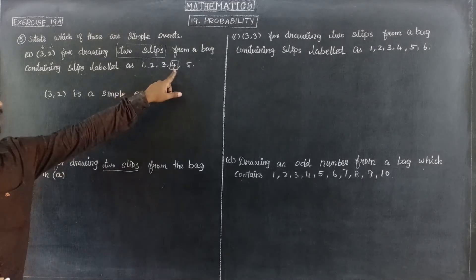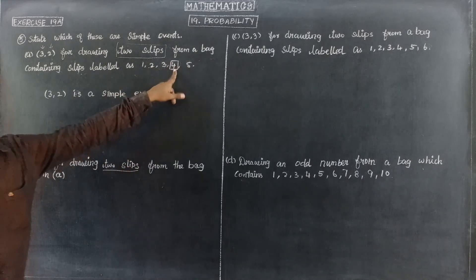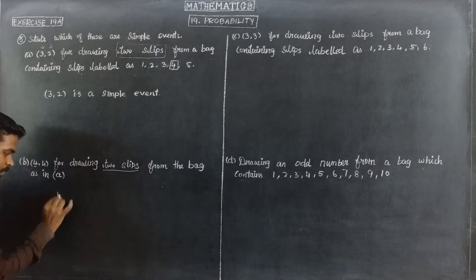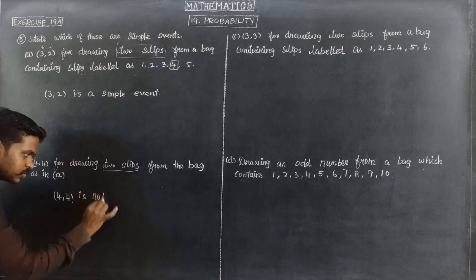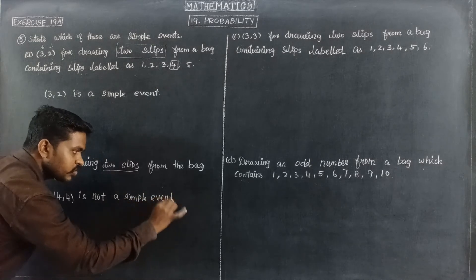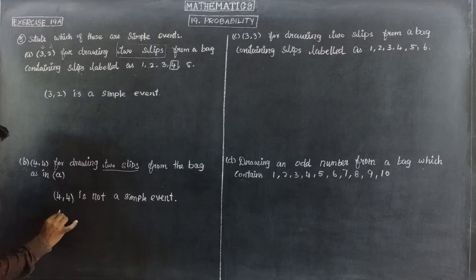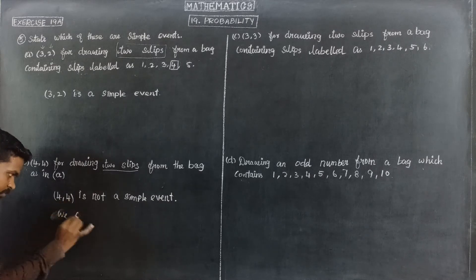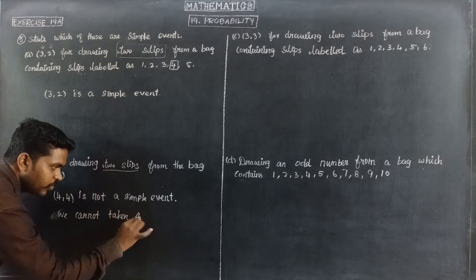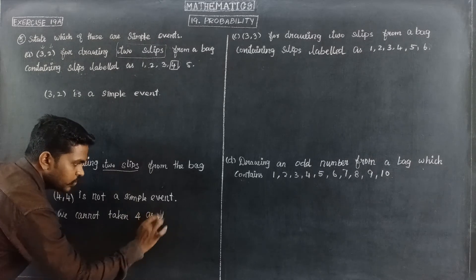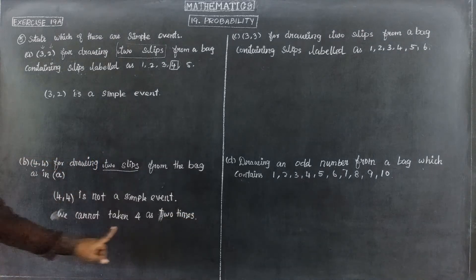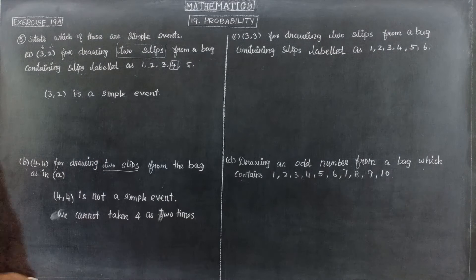So once 4 is taken out, we cannot take 4 a second time. We cannot draw 4 as 2 times. So 4,4 is not possible. Therefore 4,4 is not a simple event. Next step is subdivision C, 3,3 for drawing 2 slips.